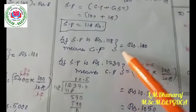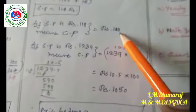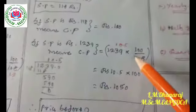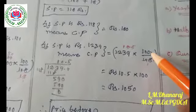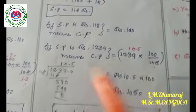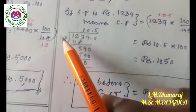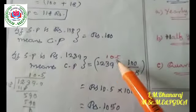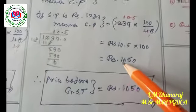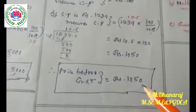If the selling price is rupees 1,239, the cost price equals 1,239 into 100 divided by 118. Dividing 1,239.0 by 118, we get 10.5. So 10.5 into 100 equals rupees 1,050. Therefore, the price before the GST is rupees 1,050.